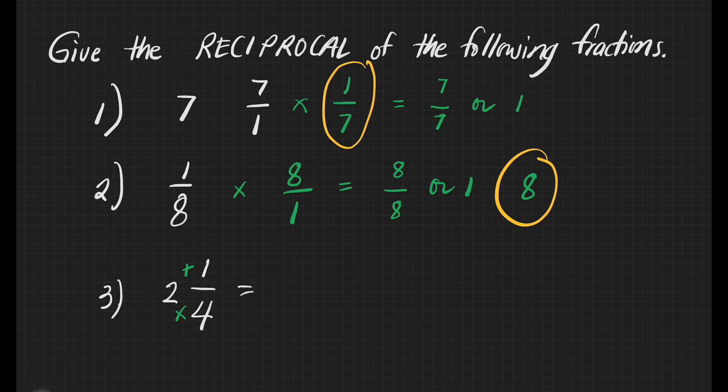2 times 4 is equal to 8, plus 1 is equal to 9. That will become 9, and then copy our denominator which is 4. Then we can already give the reciprocal of 9/4. Let us just interchange that. That's going to be 4/9, because if we're going to multiply 9/4 and 4/9, that will give us 9 times 4 is equal to 36, 4 times 9 is equal to 36, or 1. Our answer for number 3 is 4/9, and we're done.